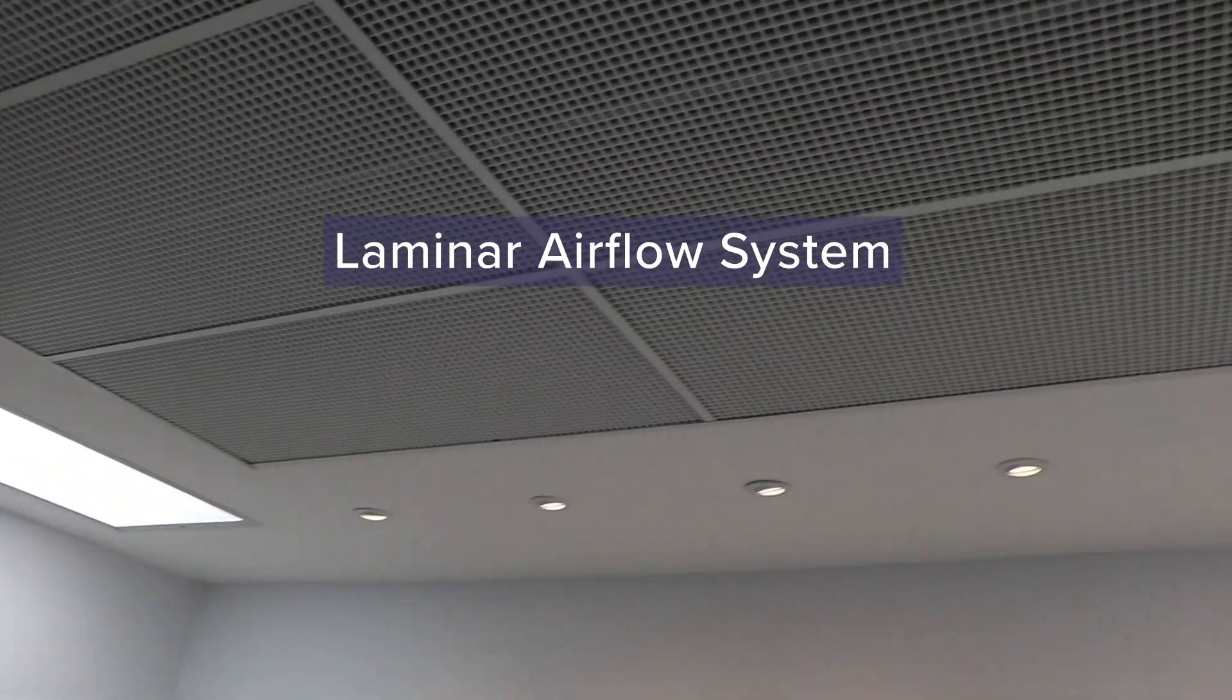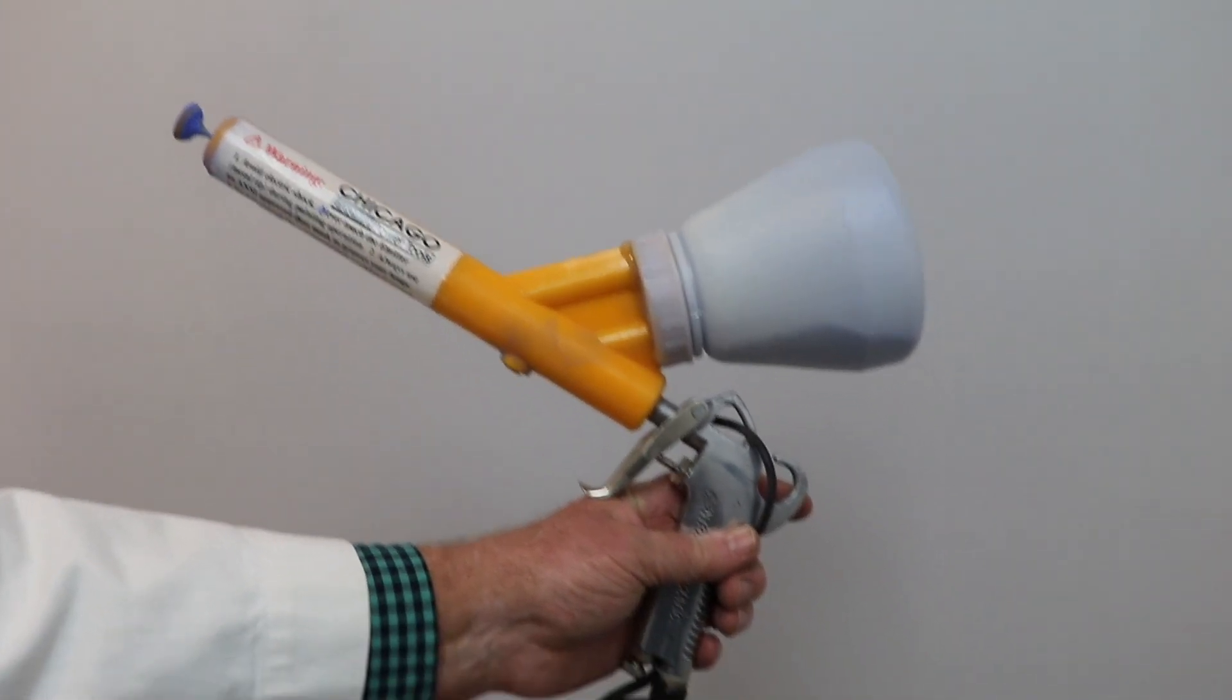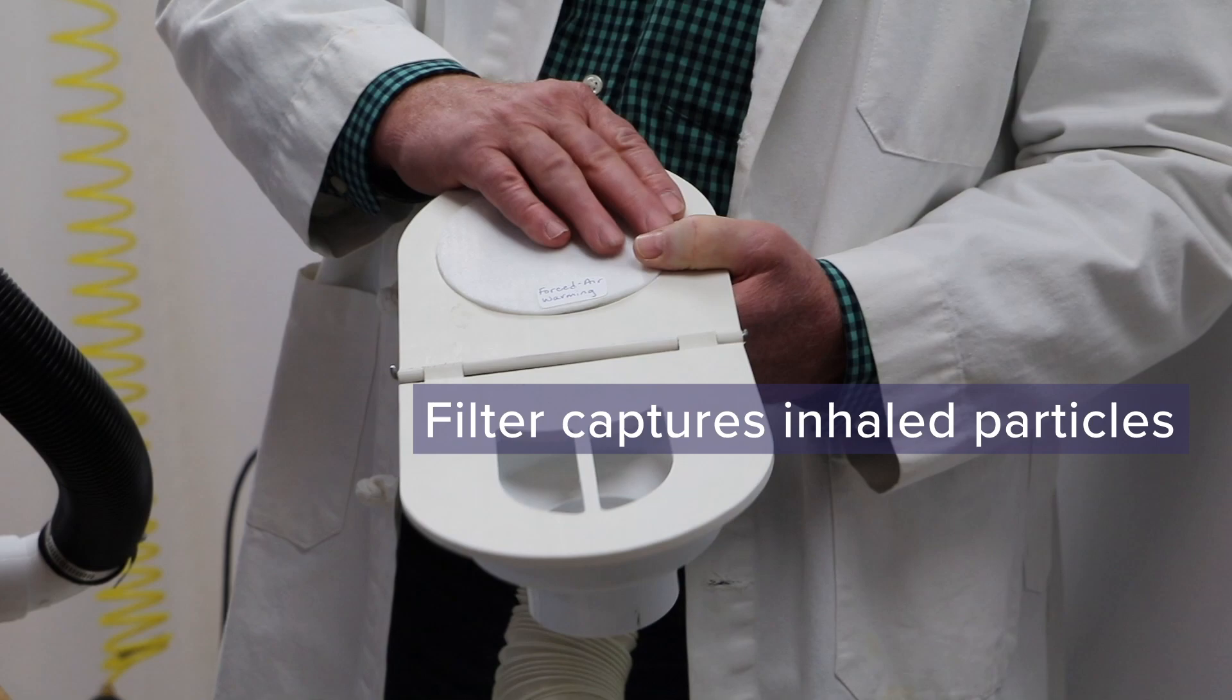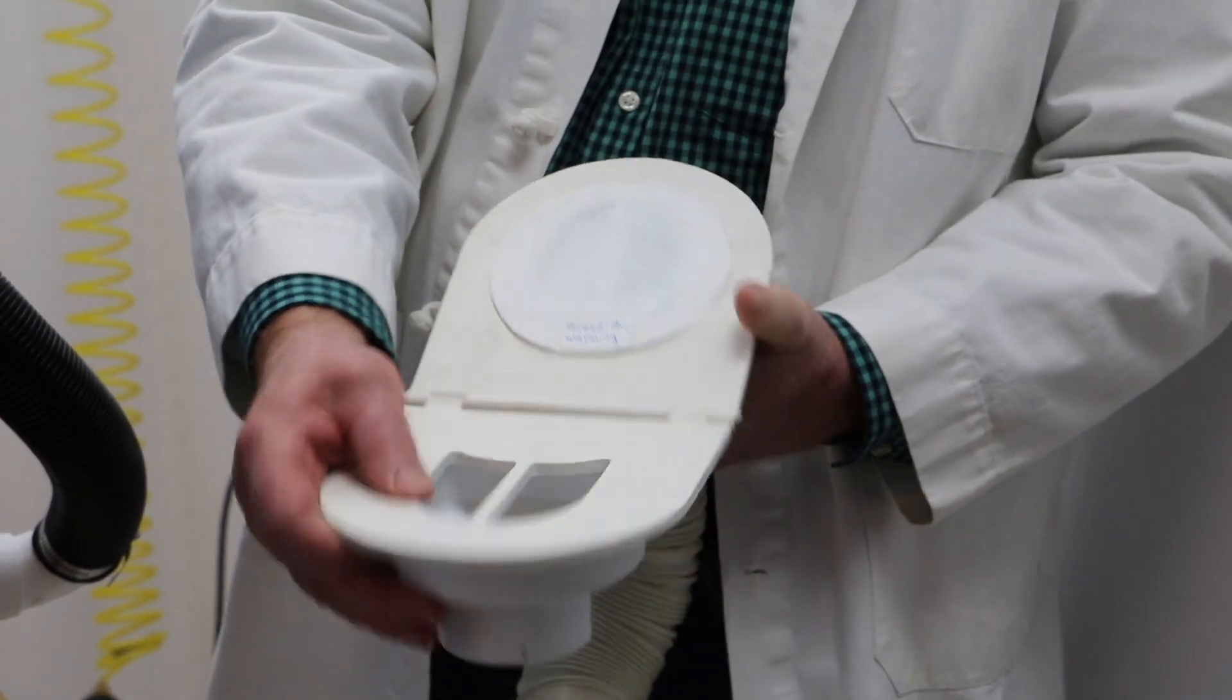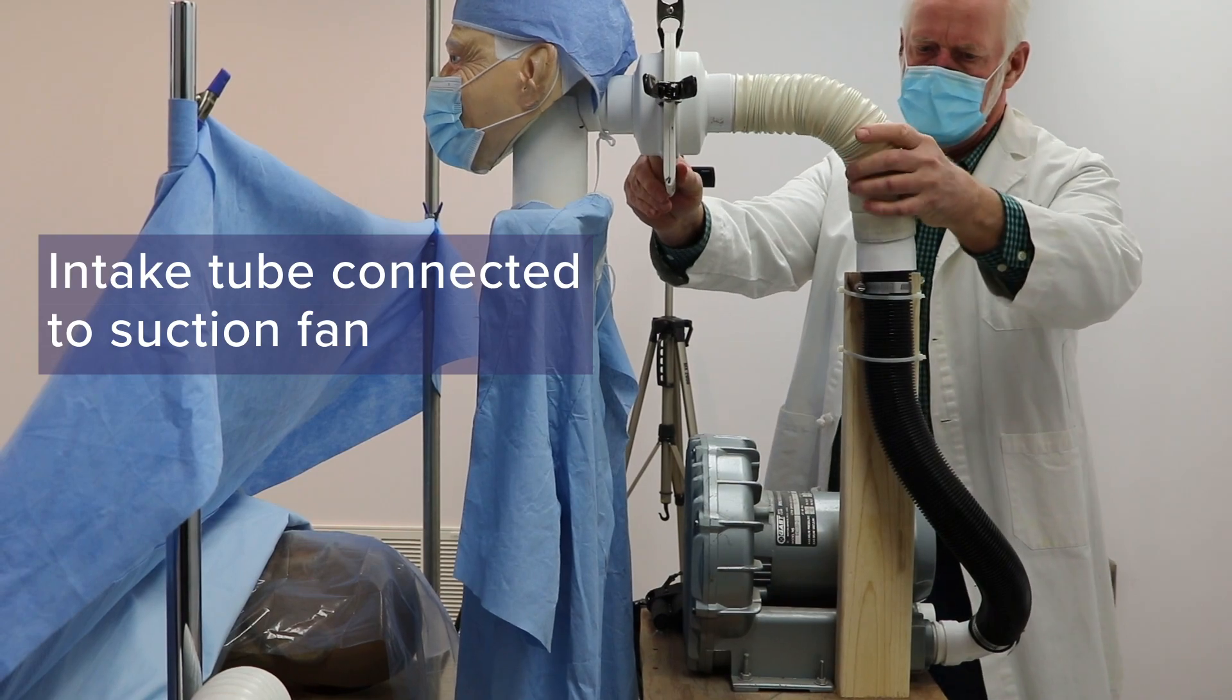The laboratory is equipped with a laminar airflow system. An air pressurized gun dispenses blue chalk powder to simulate airborne contaminants. A clean filter is placed over the air flow path to capture inhaled particles. The intake tube connects the anesthesia provider to the suction fan.